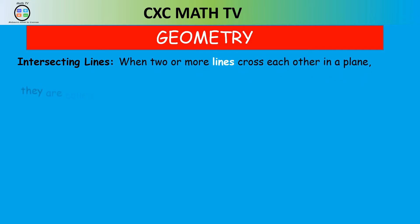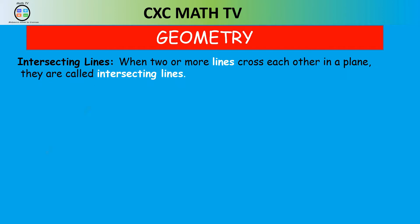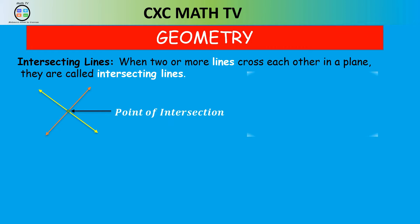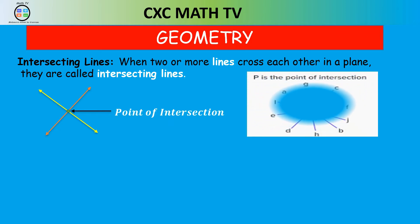Here we have a yellow line and an orange line that intersect at a common point, known as the point of intersection. In this image, P is the point of intersection. You have many lines — G, F, J, B, H, D, E, I, A — but they all intersect at one point.